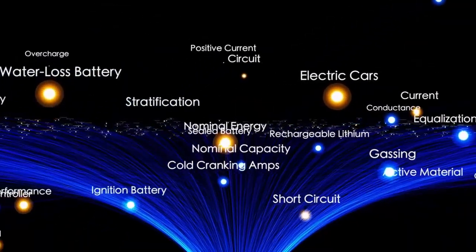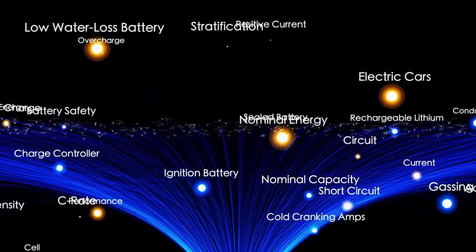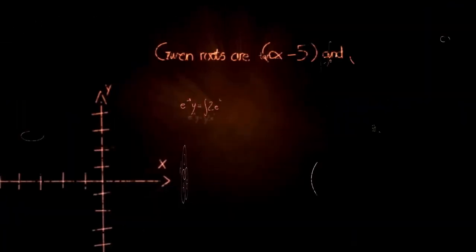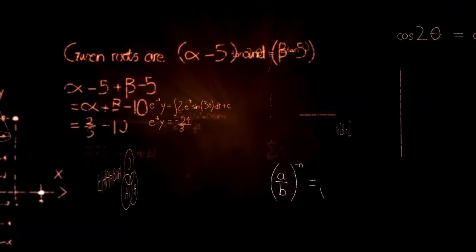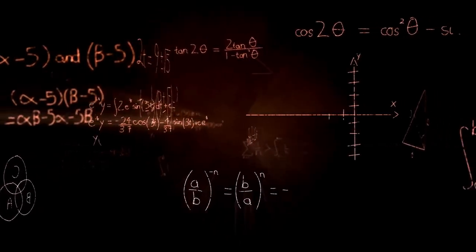It was visible in space itself. Whatever wavelengths made up that beam, they were interacting with something in the vacuum between 3i Atlas and Earth to create visible light.